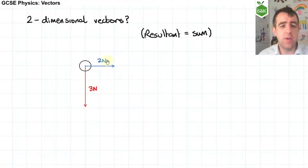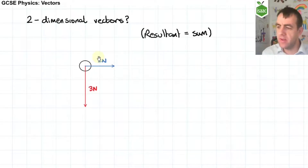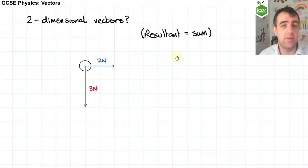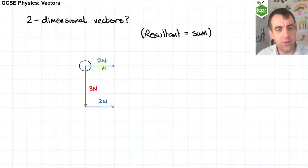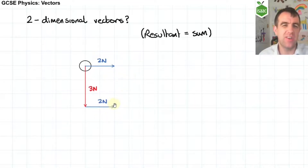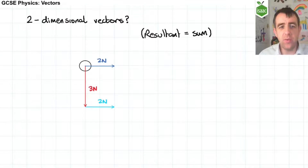Now a common mistake is to say 3 plus 2 is 5. That's okay in one dimension, but we're now in two dimensions. Don't forget these vectors can be drawn anywhere — we can move them around the page. Remember how we add vectors together: we add vectors together by starting the second vector on the end of the first. So let's redraw the 2 newton vector on the end of the 3 newton vector. I could just as easily have copied the 3 newtons onto the end of the original 2 newtons. So this is the 2 newtons drawn on the end of the 3 newton force, and the resultant will be connecting the start of the 3 newton to the end of the 2 newton.